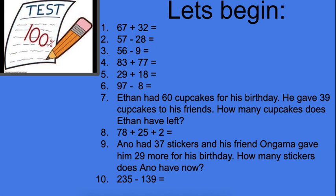Last one, 235, take away 139. A little bit of a trick one there for you, but I know you can all manage it. It's all the same rules, just remember to have each number in its correct house.